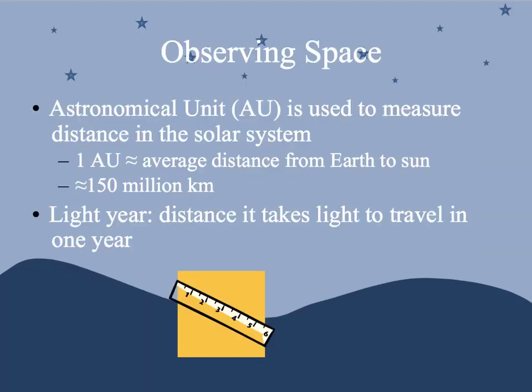When talking about space, we don't usually use miles and kilometers, because space is humongous and the numbers would be really big. So scientists created the astronomical unit to measure distance in our solar system. An astronomical unit is the average distance from the Earth to the Sun — so we're 1 AU from the Sun, or roughly 150 million kilometers.